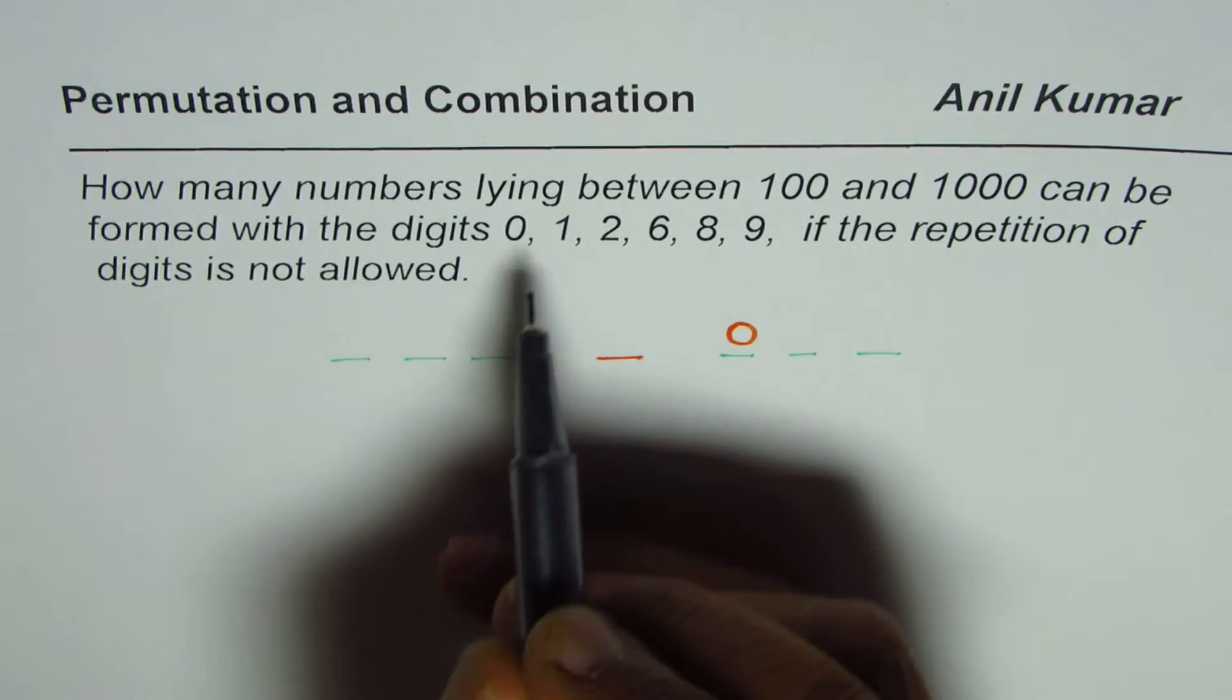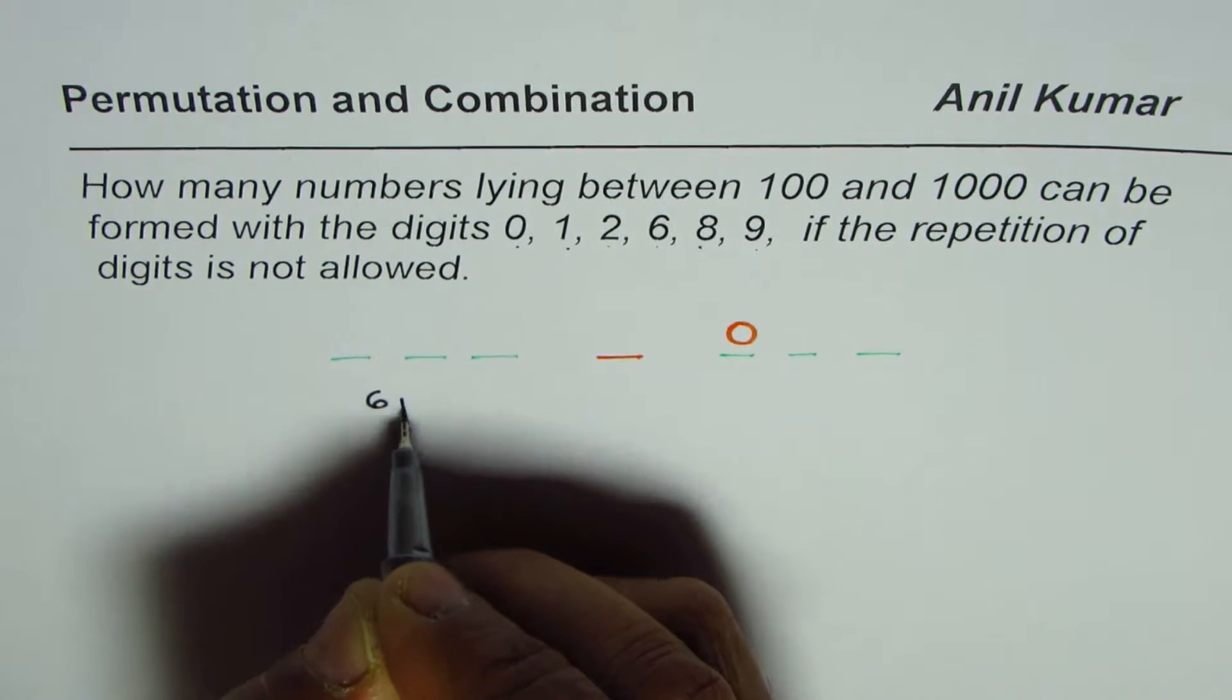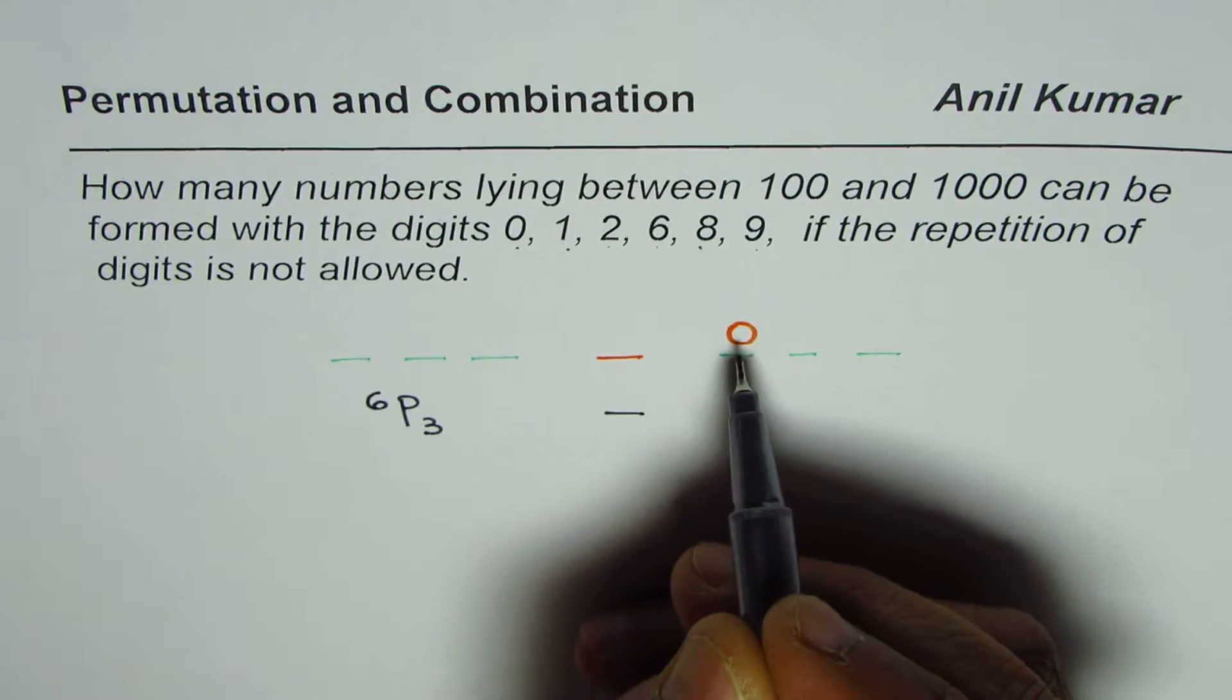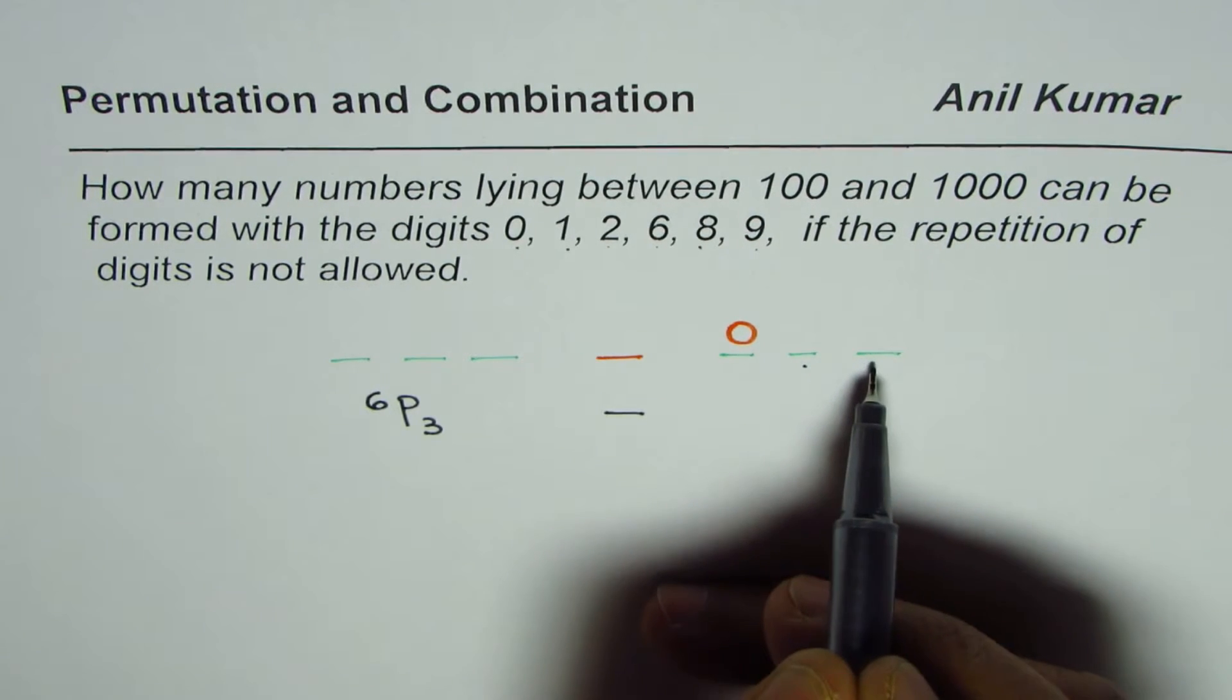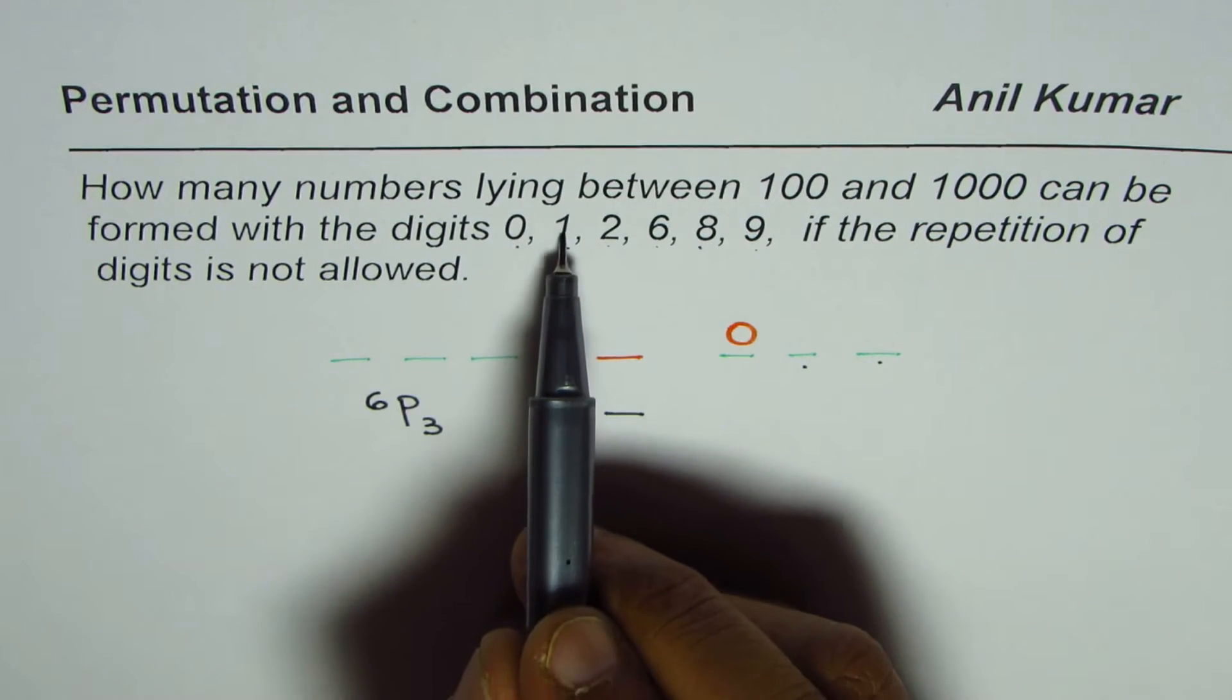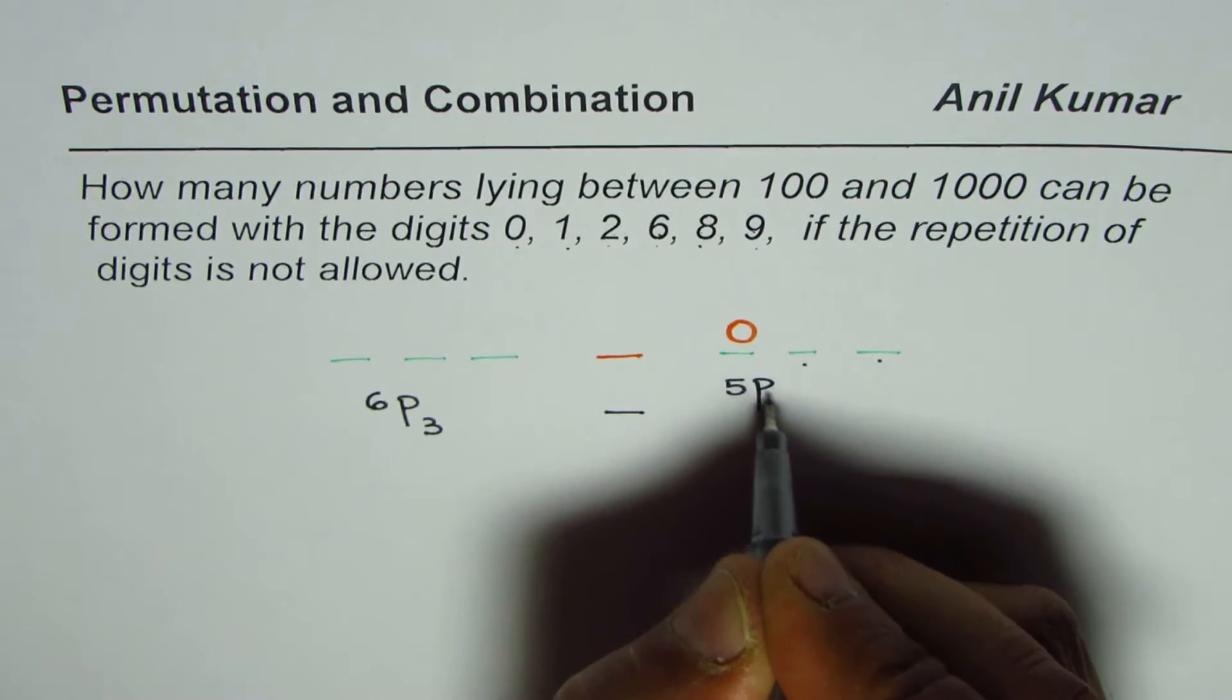selecting 3 out of 6 digits is 6P3, and then we take away those which start with 0. That means we have already fixed 0 at the first position. We are looking now at only two positions, which should be filled from the remaining 5 numbers. That is 5P2.